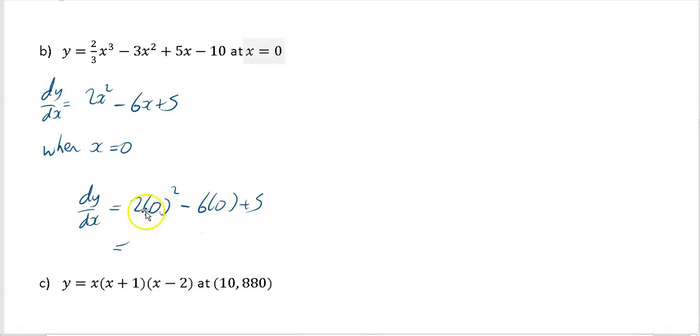6 times 0 is going to be 0. So it's 0 minus 0 plus 5, so it just leaves you with plus 5.